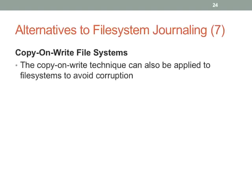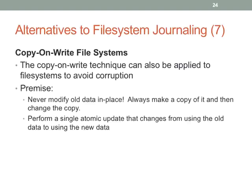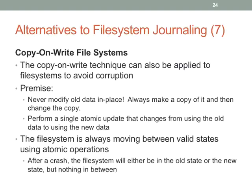The final alternative is copy-on-write. You never modify data in place; you always make a copy and modify the copy. The copy is not visible to the rest of the file system until you do a single atomic update that makes it visible. If you need to do two things, you make a bigger copy and then have a single atomic update changing from the old version to the new version. The file system is only ever moving from valid state to valid state, and a crash will either come before or after that atomic operation — so you never see an invalid state.